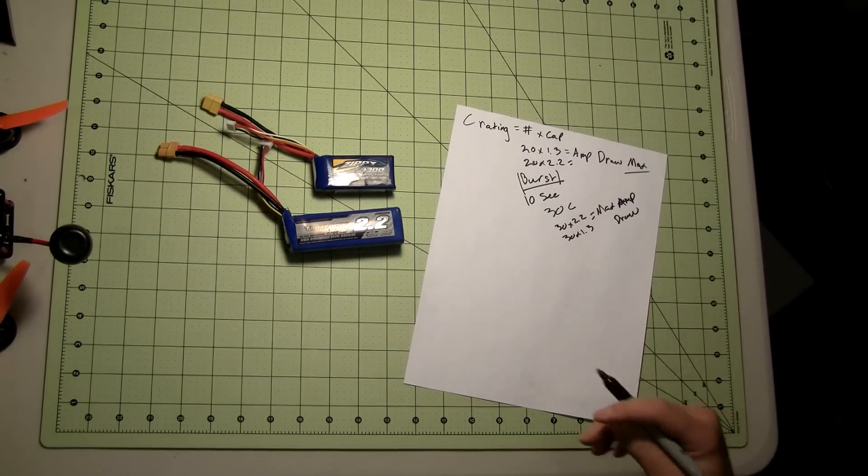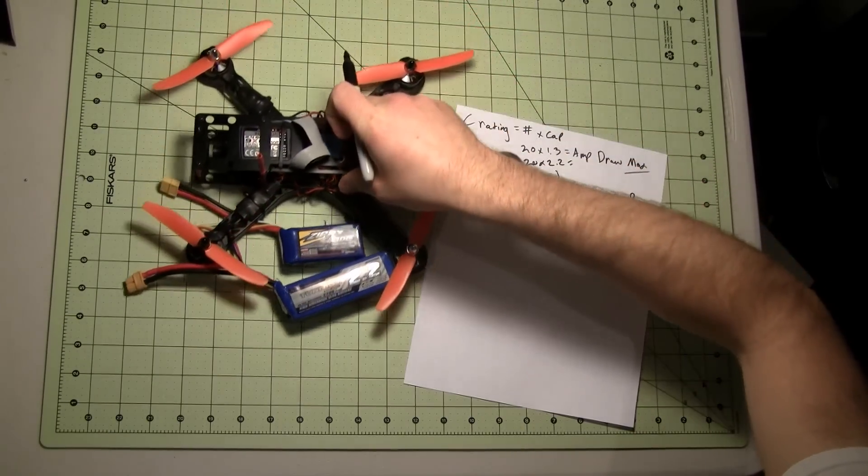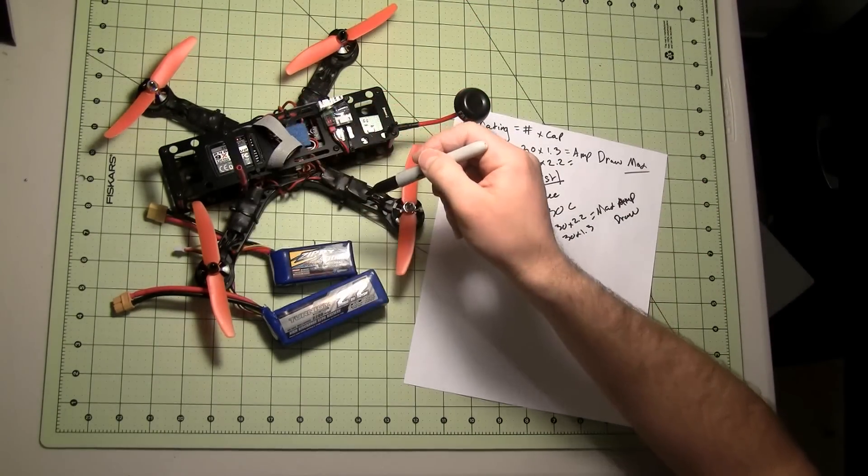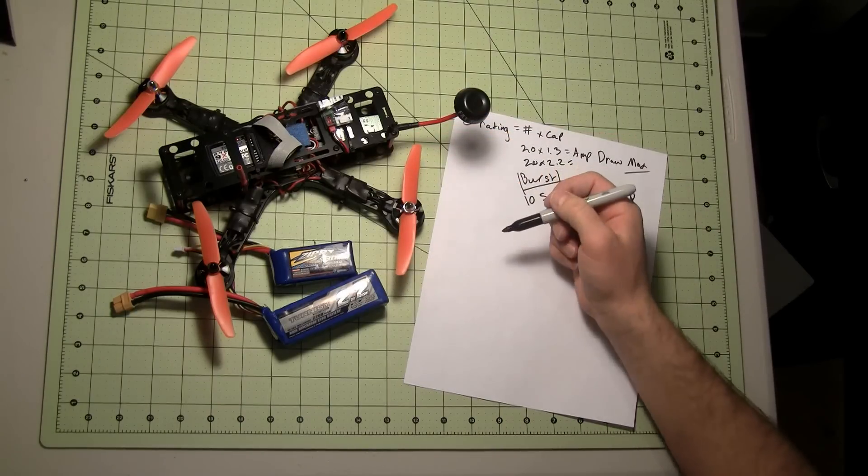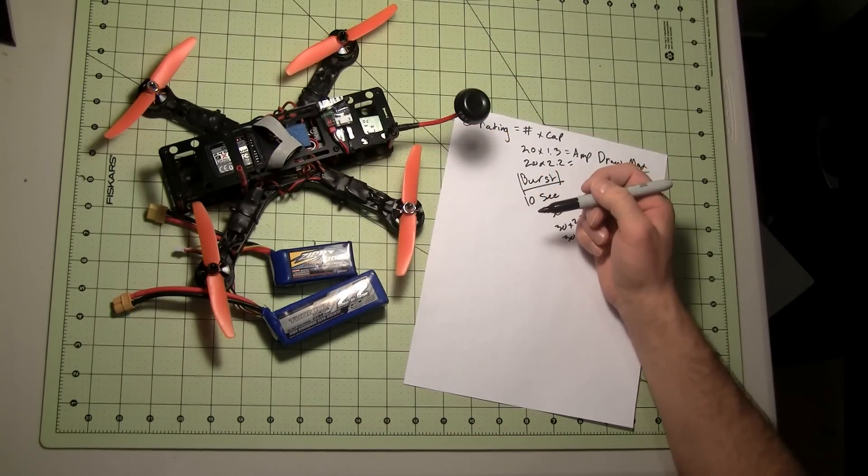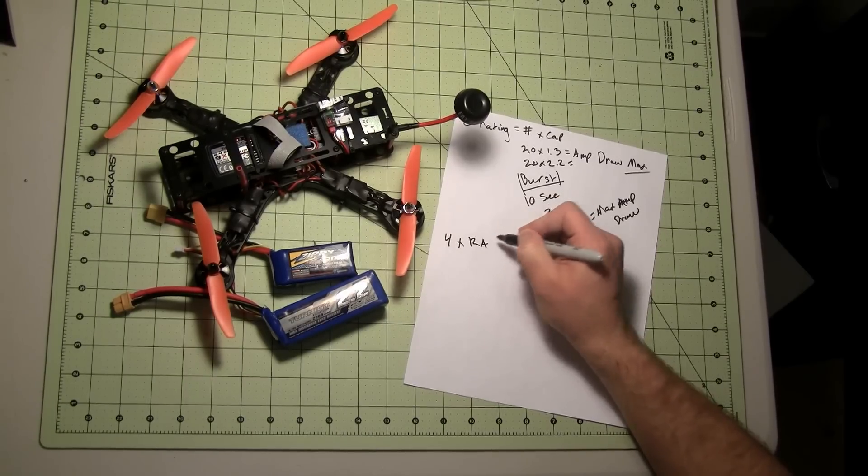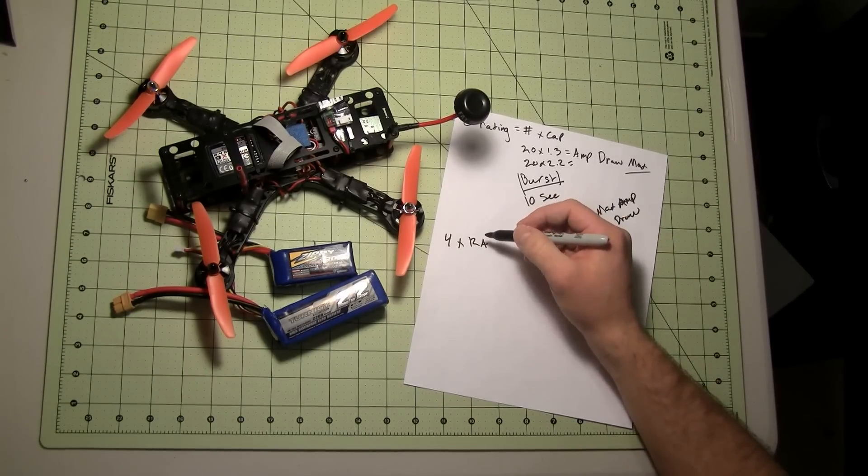So why is that important? If we go back to my mini quad here, we can see that I have four motors, and I'm running 12 amp speed controllers with a 15 amp burst. So if I do four times 12 amps, but again I have a burst, so I'm trying to figure out the max.